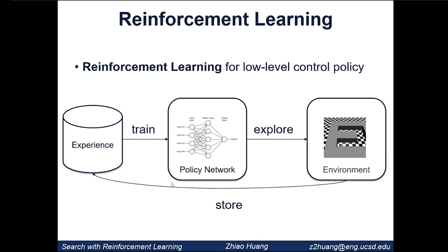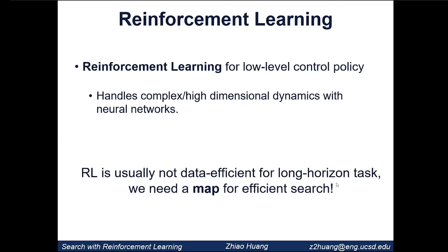Deep reinforcement learning is well-suited for nonlinear control tasks and can handle complex, high-dimensional environments due to neural network generalization. However, RL is also well known to suffer from data efficiency problems, especially for long-horizon tasks. A typical RL algorithm leads to optimization over very long and high-dimensional trajectories, making optimization difficult because of the curse of dimensionality.